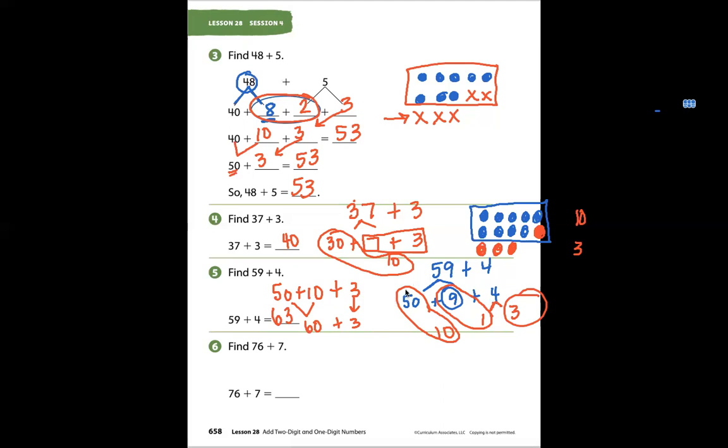Last problem says find 76 plus 7. If I have 76, let's break it into expanded form: 70 plus 6. We're still adding 7. Now we're going to look at this to see if we can make a group of 10. If I have 6: 1, 2, 3, 4, 5, new line, 6. How many more do I need to get to 10? 6 and 4 make 10.